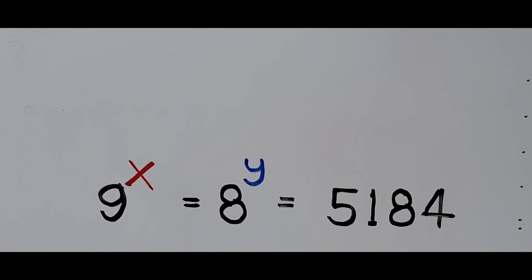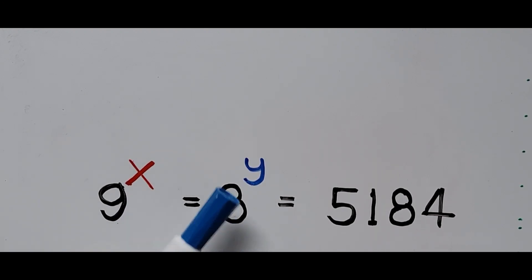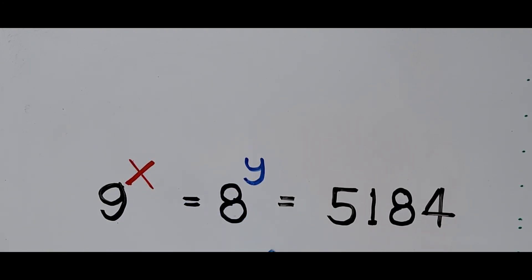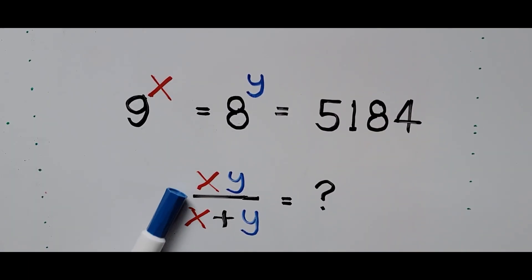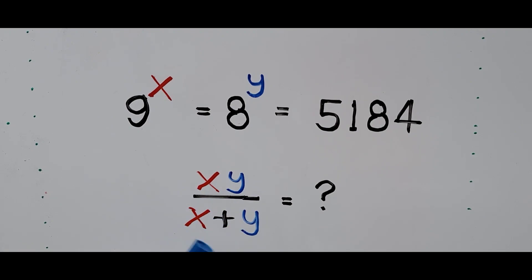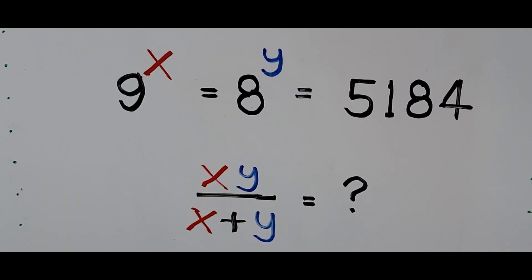We have an exponential equation: 9 to the power x times 8 raised to power y equals 5184. We need to find the value of x times y divided by x plus y.